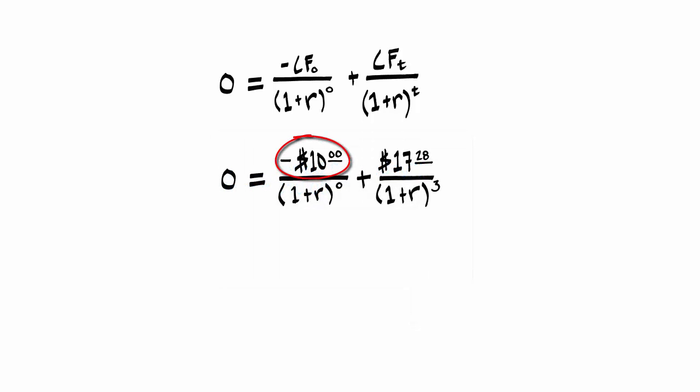In the formula, you'll see the value of your investment, time period zero, summed with the quotient of $17.28, and 1 plus r, to the third power, because the investment is realized in year three. All equal to zero, because we're calculating r for a net present value of zero. And again, anything raised to the power of zero equals one. And if you were to plug in 20% for the value r, you would find that this equation holds true.